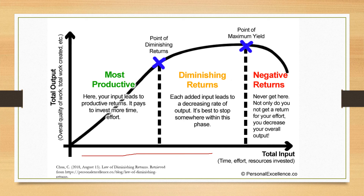The horizontal axis here is talking about time — the total input. When you start a project or when you start studying, you will see that there is a rapid incline of productivity. At the beginning stages you're climbing up, you're doing good, you're retaining information, but at some point you're going to hit the point of diminishing returns — where you plateau your productivity.